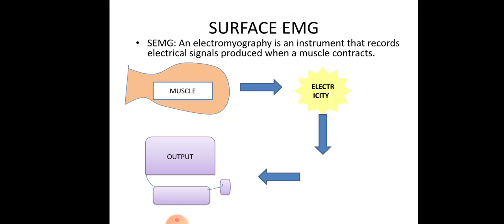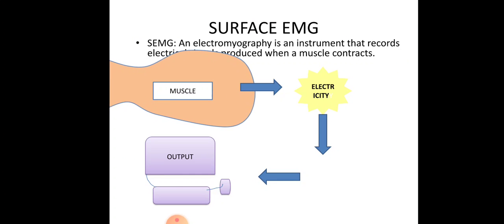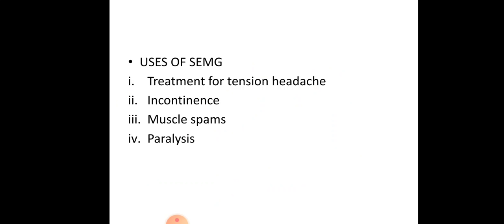Surface EMG picks up signals from muscles. When a muscle contracts — either eccentrically or concentrically — it develops electricity. Surface EMG electrodes pick up that electricity and project it to the output system where it is demonstrated. This is how surface EMG records signals from muscle.